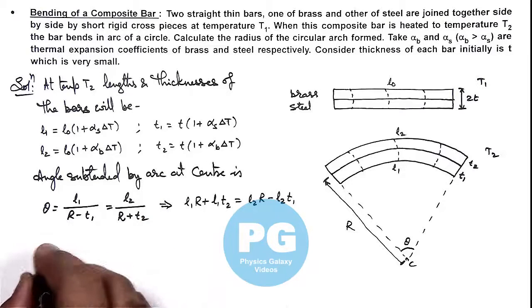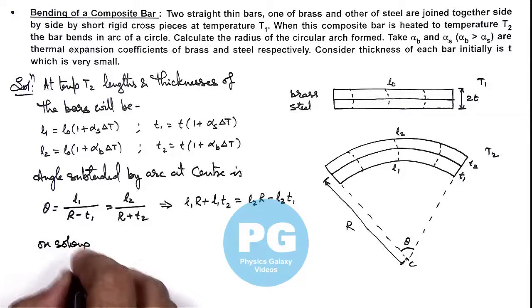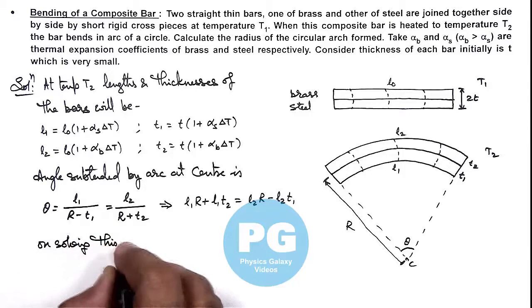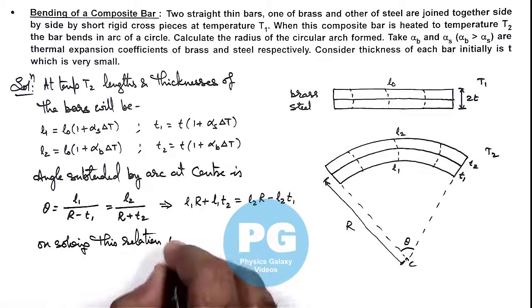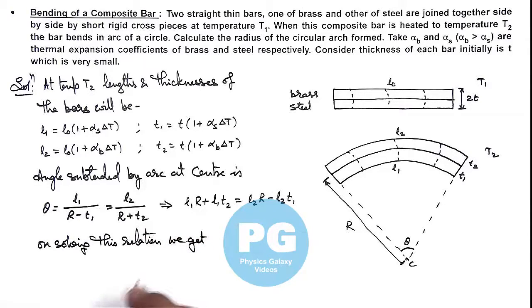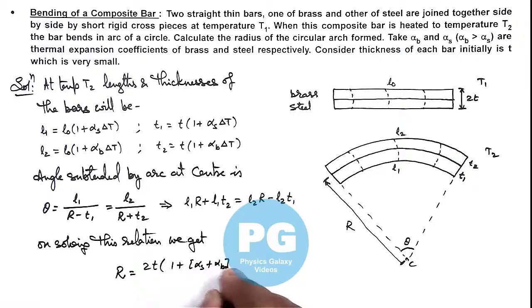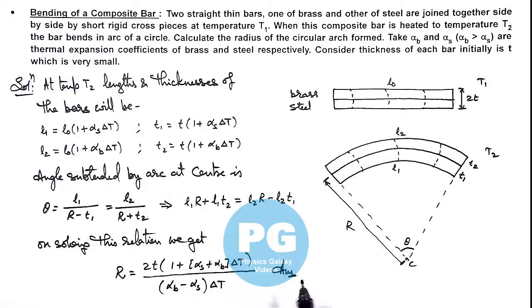On solving this relation, you can solve and simplify this to get the value of radius of curvature, which will be given as R = 2t × (1 + (alpha_s + alpha_b) × ΔT) / ((alpha_b - alpha_s) × ΔT). That will be the result of this problem. Here I am leaving it as an exercise for you to substitute these values and simplify to get this result.